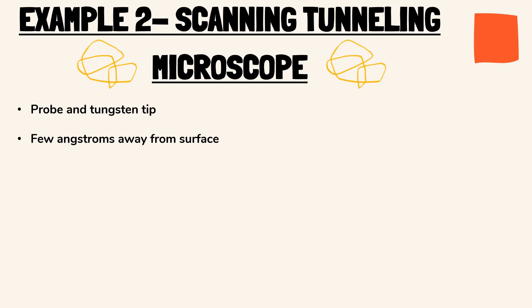The tip is brought very near to the surface, a few angstroms apart and voltage is applied to the probe. The electrons can now transmit through the tiny space that exists between the tip and surface.